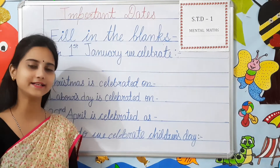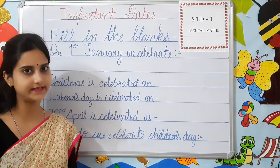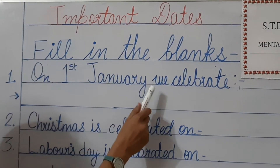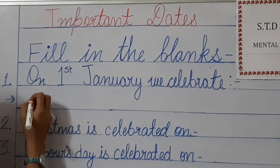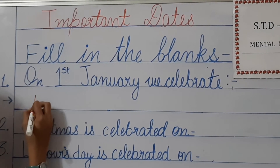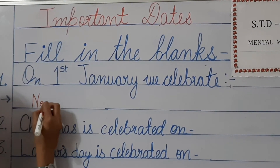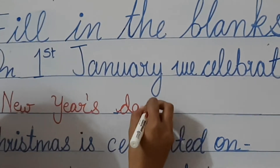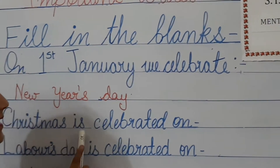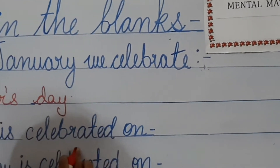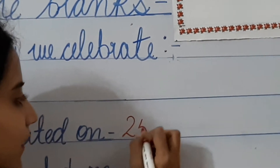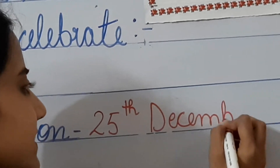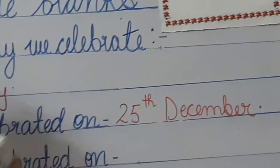Now our next topic is important dates. Look here, children. Number 1: on 1st January, we celebrate — very good, we celebrate New Year's Day on 1st of January. Next question: Christmas is celebrated on 25th of December, as we celebrate the birthday of Jesus Christ.